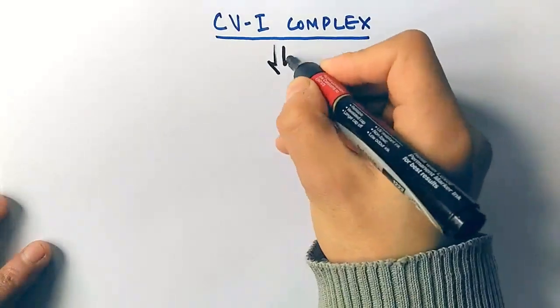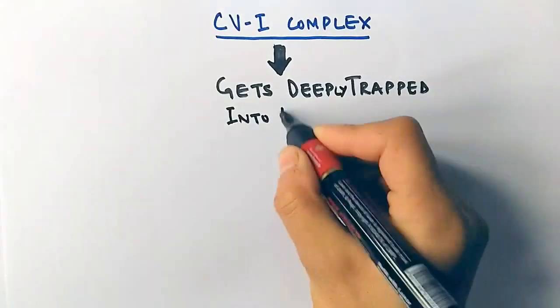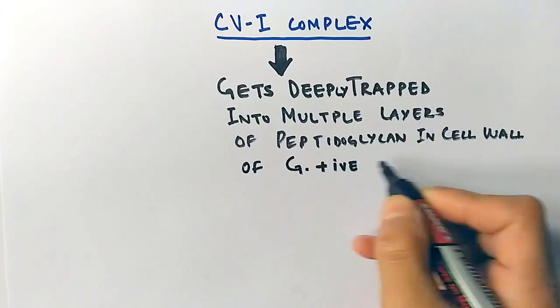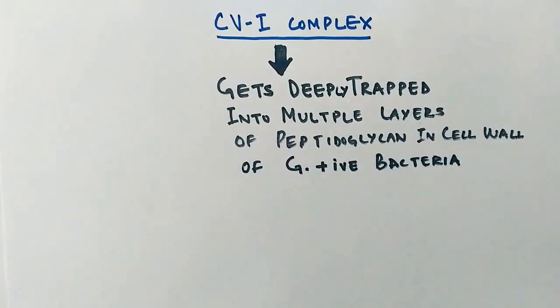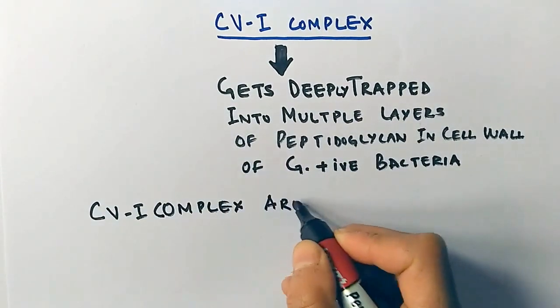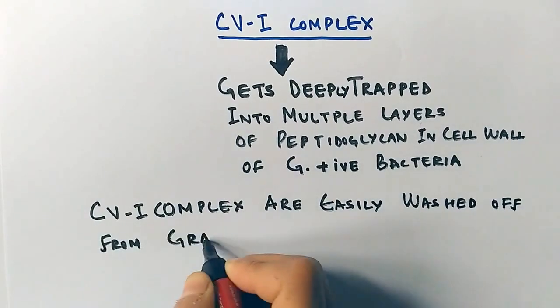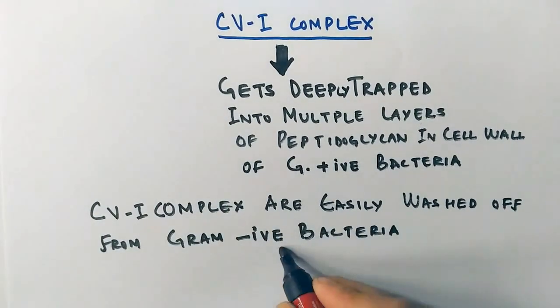This CV-I complex gets deeply trapped into the multiple layers of peptidoglycan in the cell wall of gram positive bacteria, whereas in gram negative bacteria these multiple layers are absent, so the CV-I complex is easily washed off from gram negative bacteria due to the monolayer nature of peptidoglycan.